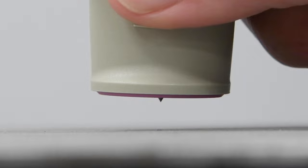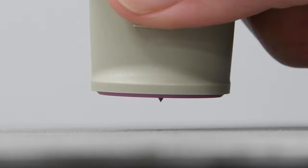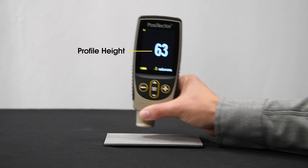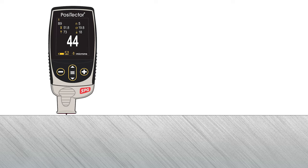During testing, a flat base rests on the highest peaks and a spring-loaded tip drops into the valleys. Ensure that the surface is free of dust and other contaminants, then place the probe foot level on the surface to be measured. The profile height is displayed on the gauge.